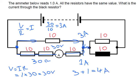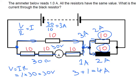Because these two resistor values are both the same, the current must be evenly distributed. So we know that 2 amps must be going through here and 2 amps must be going through here. So that's our final answer: 2 amps.